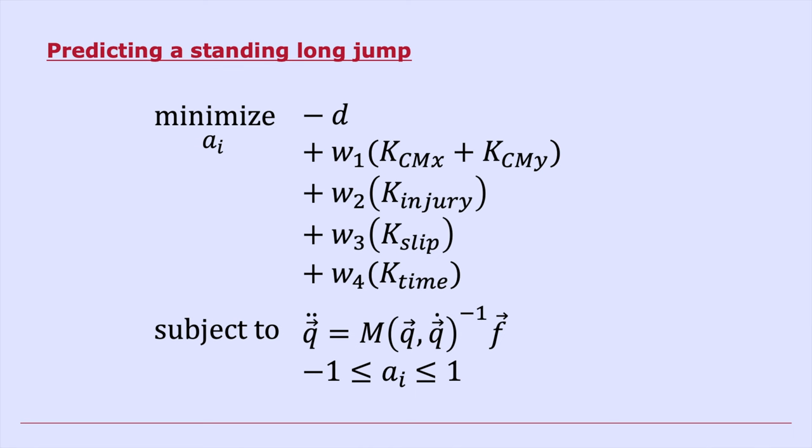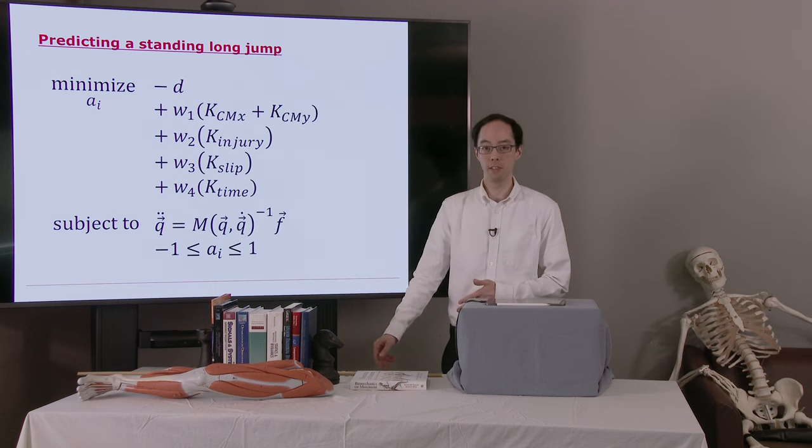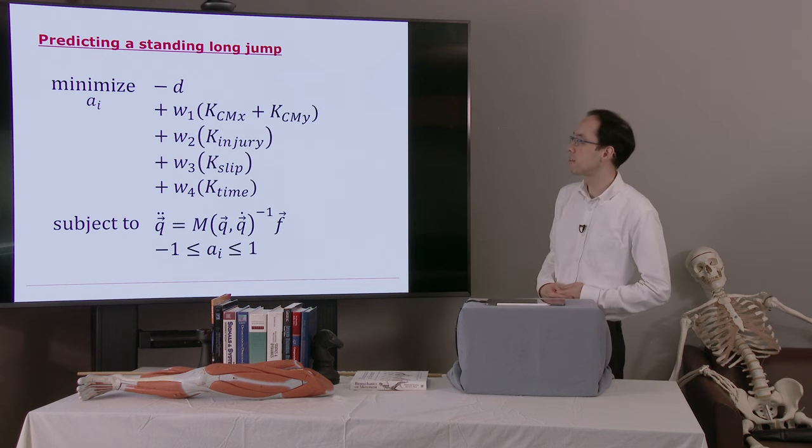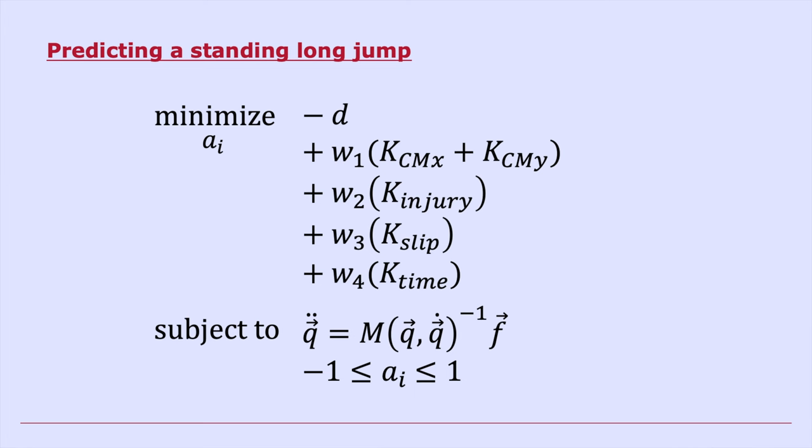Here's the optimization problem that he posed. So he's minimizing negative d. d is the distance that the model jumped. And he's minimizing the negative of that. So he's trying to maximize the jump distance. And there are some other terms in the objective function. These other terms avoid undesirable solutions. For example, solutions where the model might get injured. So there's a term for that.